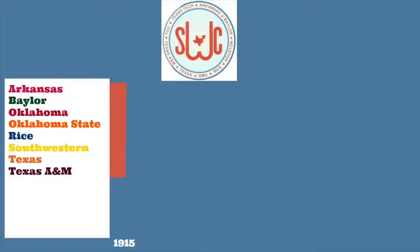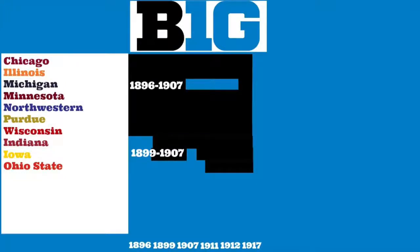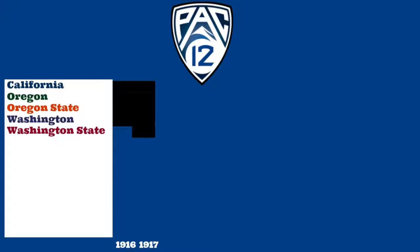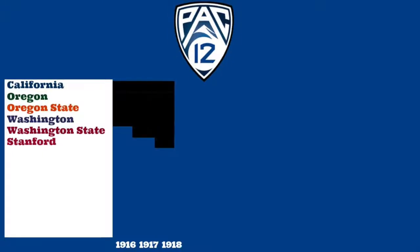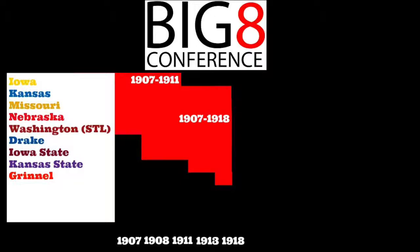In 1915, the Southwest Intercollegiate Athletics Conference was formed with Oklahoma, Oklahoma A&M (now Oklahoma State), Arkansas, Southwestern, Baylor, Rice, Texas, and Texas A&M. In 1916, Southwestern made a quick exit from the Southwest Conference. Across the country, California, Washington, Oregon, and Oregon State formed the Pacific Coast Conference. In 1917, Michigan rejoined the Big Nine and it was officially called the Big Ten. Washington State also joined the PCC. In 1918, Stanford joined the PCC and SMU joined the Southwest. Grinnell joined the Missouri Valley, and Nebraska left to go independent. In 1919, Oklahoma left the Southwest to join the Missouri Valley.